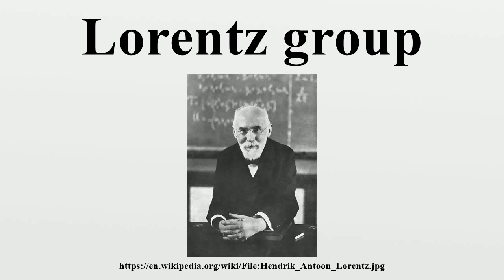Restricted Lorentz group: The restricted Lorentz group is the identity component of the Lorentz group, meaning it consists of all Lorentz transformations that can be connected to the identity by a continuous curve lying in the group. It is a connected normal subgroup of the full Lorentz group with the same dimension — in this case, dimension six. The restricted Lorentz group is generated by ordinary spatial rotations and Lorentz boosts. Since every proper orthochronous Lorentz transformation can be written as a product of a rotation and a boost, it takes six real parameters to specify an arbitrary proper orthochronous Lorentz transformation.